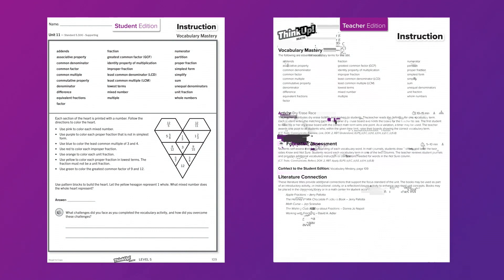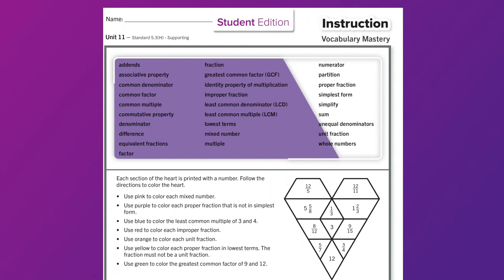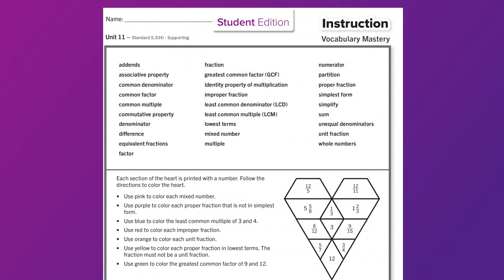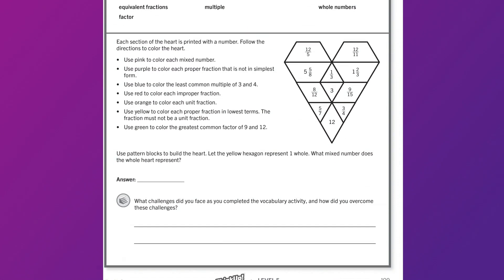This would also be a great tool for students to revisit at the end of the unit. Hopefully, they are able to see how far they have come by moving some of those words from the not sure column to the no column. The student edition vocabulary activities go beyond simply writing down a definition. Students are challenged to apply their vocabulary knowledge to complete a task. Students have a list of academic vocabulary found in the unit. The vocabulary mastery activity is located below the word bank.